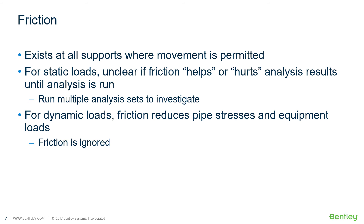In Autopipe, it is very easy to run two analysis sets — one with friction and one without — to compare the results and determine the conservative approach.